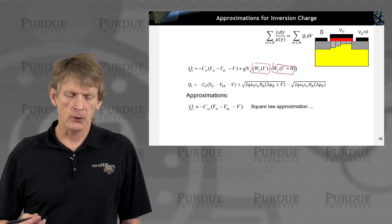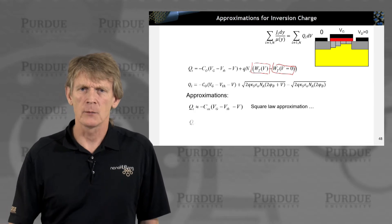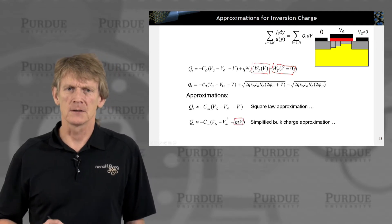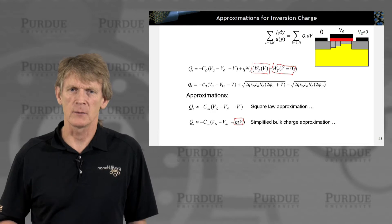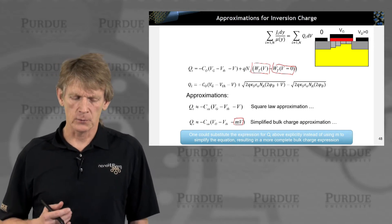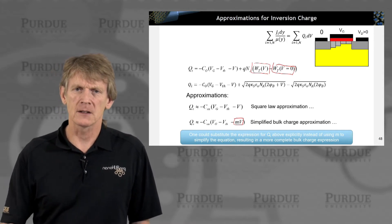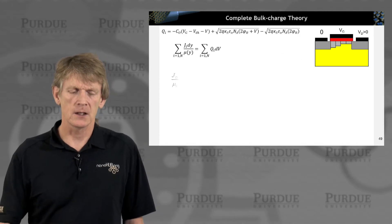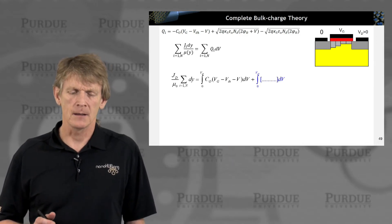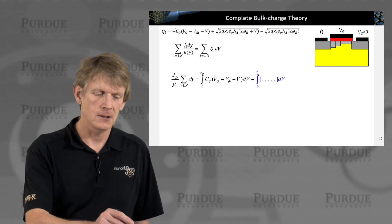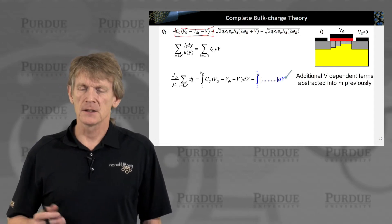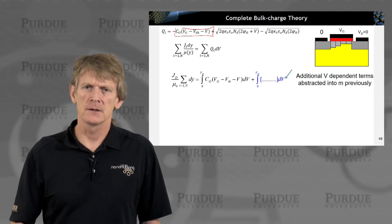But then we imposed approximations like the square law approximation or the simplified bulk charge model where we had a factor of m here that helped us scale and understand the devices better. You can carry forward these expressions more explicitly. It's been done in the textbook as well. And you get more complex expressions. The way you would do that is you start with similar expressions and add and integrate more complicated terms as shown here in blue that encapsulate not just this component but the individual square root components. So these additional components were sort of abstracted into this parameter m.